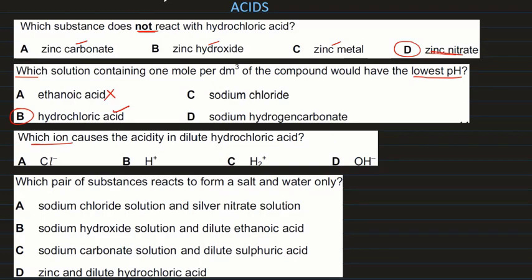Which ion causes the acidity in dilute hydrochloric acid? The ion responsible for acidity is the H⁺ ion.